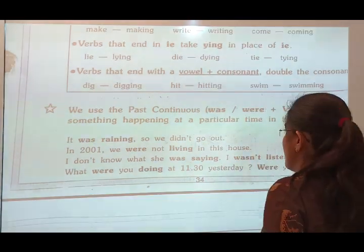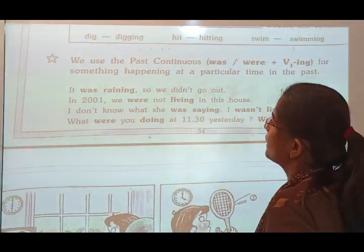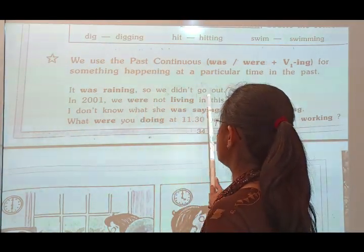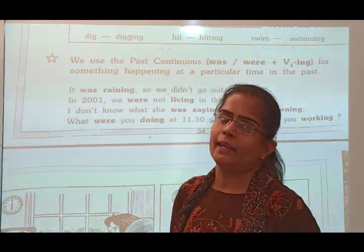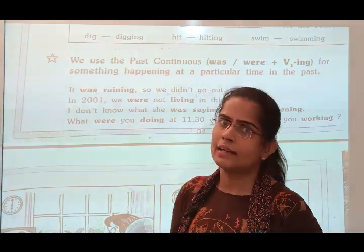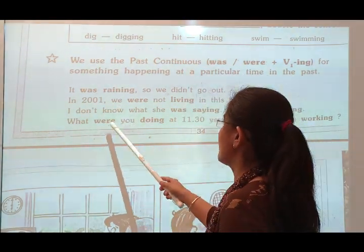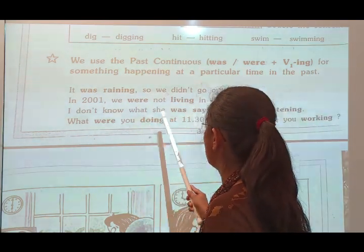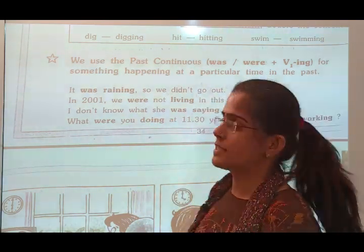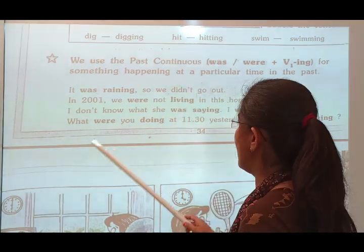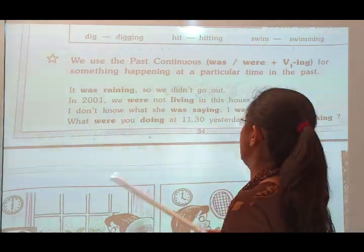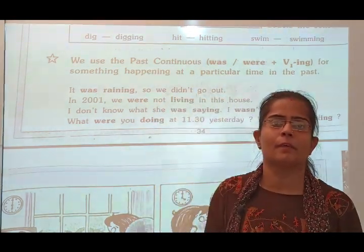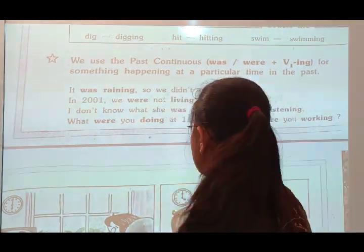Here are some examples of past continuous tense. 'It was raining, so we didn't go out.' 'In 2001, we were not living in this house.' 'I don't know what she was saying.' 'I wasn't listening.' And: 'What were you doing at 11 o'clock yesterday? Were you walking?' That means: yesterday at 11 o'clock, what were you doing?